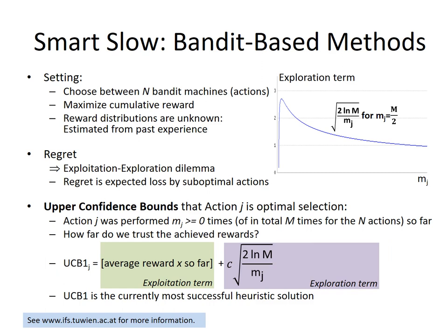Now let's have a look at smart-slow algorithms, in particular exploitation-exploration algorithms, and the Monte Carlo tree search, which is the state of the art. First, let's go through the term exploration-exploitation.